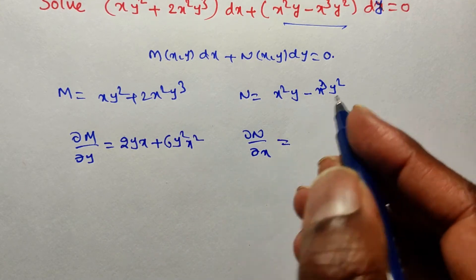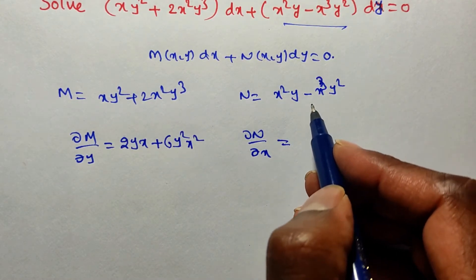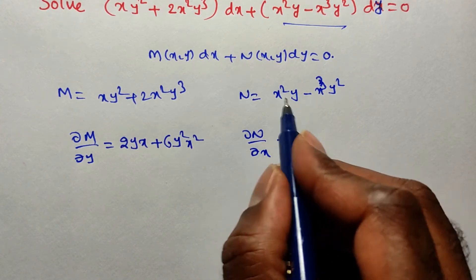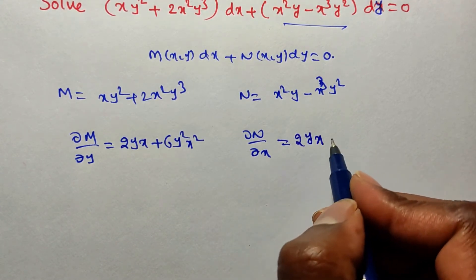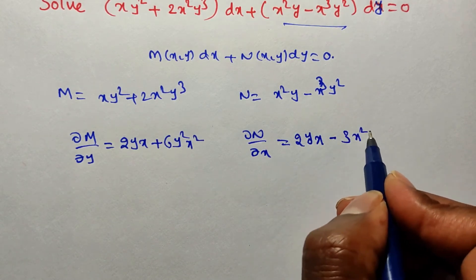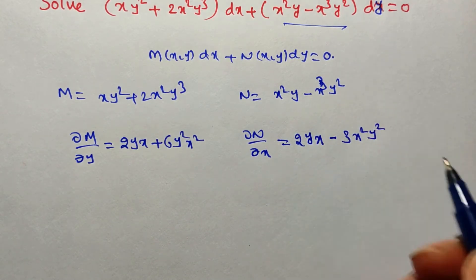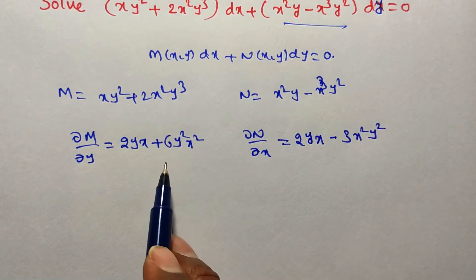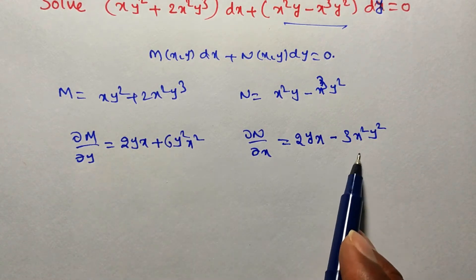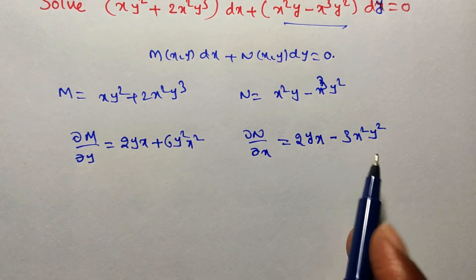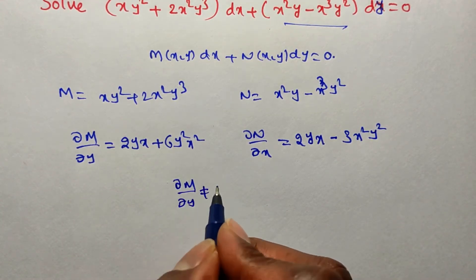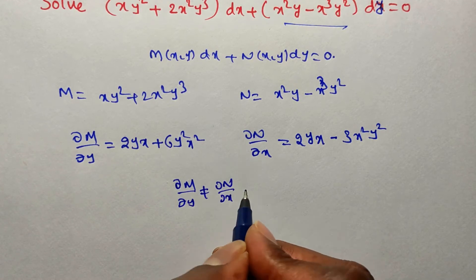For ∂N/∂x, differentiating N partially with respect to x: y is constant, derivative of x² is 2x, so we get 2xy. Then derivative of x³ is 3x², giving −3x²y². Observe: both have 2xy, but ∂M/∂y has +6x²y² while ∂N/∂x has −3x²y². Therefore ∂M/∂y ≠ ∂N/∂x.